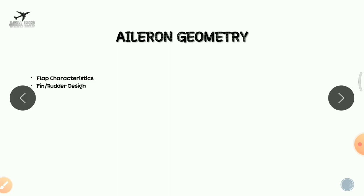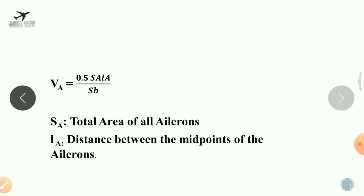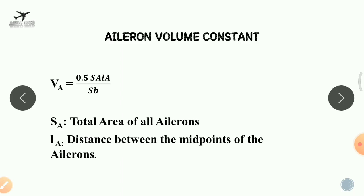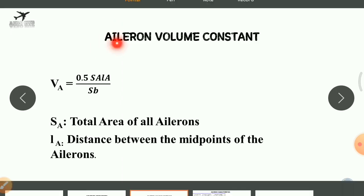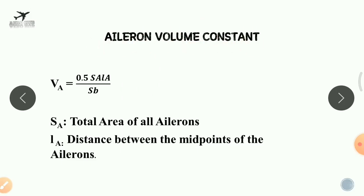We will now discuss one of the important design criteria for the aileron, called the aileron volume constant. The formula is: capital V subscript A equals 0.5 times SA times LA, divided by S times B — where capital S is the wing area, B is the wingspan, SA is the total area of the aileron, and LA is the distance between the midpoints of the ailerons.